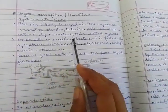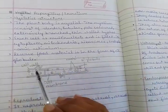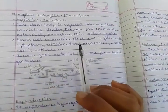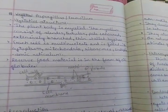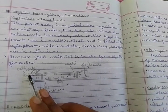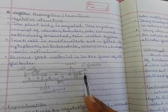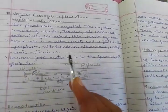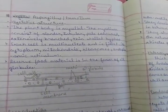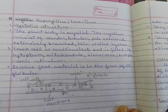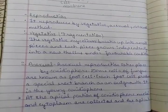Every cell is multi-nucleate and has cytoplasm, mitochondria, ribosomes, and reticulum etc. The reserve food material in Aspergillus is stored in the form of oil globules. This is the diagram showing the cell wall, the cell membrane, the nucleus, and the reserve food as oil globules. The entire cell is multi-nucleate. This is the vegetative structure — take a screenshot.